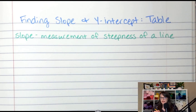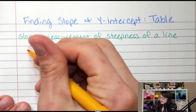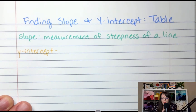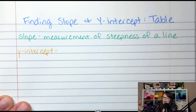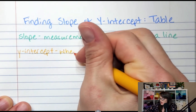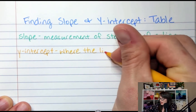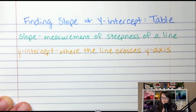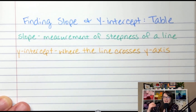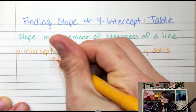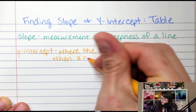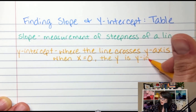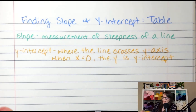The y-intercept is very self-explanatory. The y-intercept is where the line crosses the y-axis. Another thing you can say is when x equals 0, the y value is the y-intercept. And we'll look at what that means in the table.